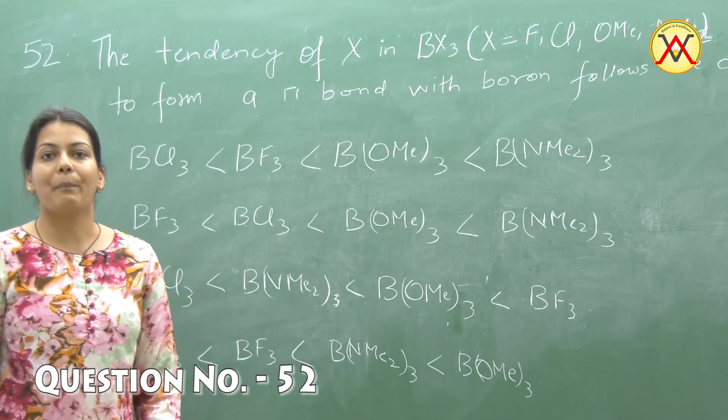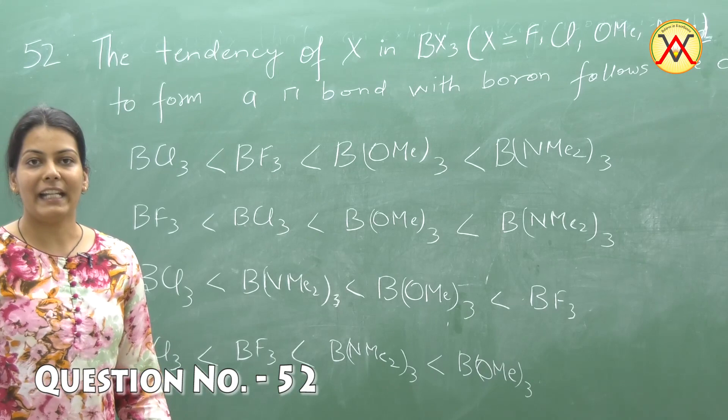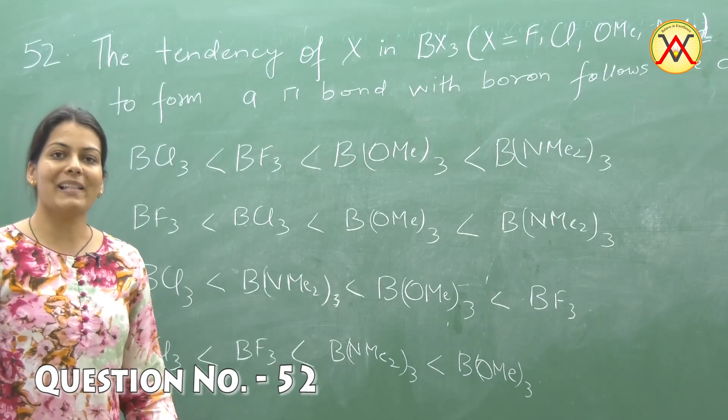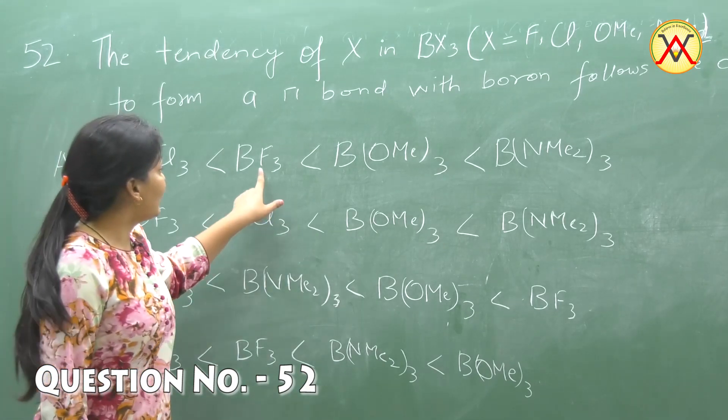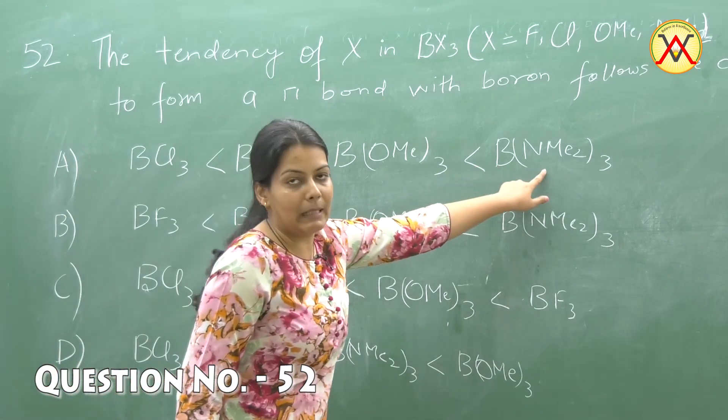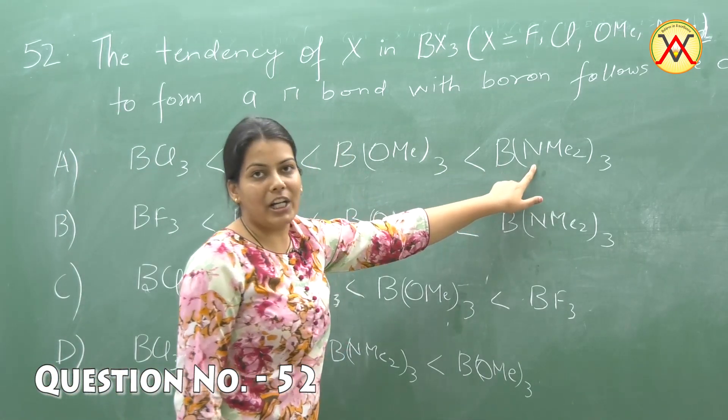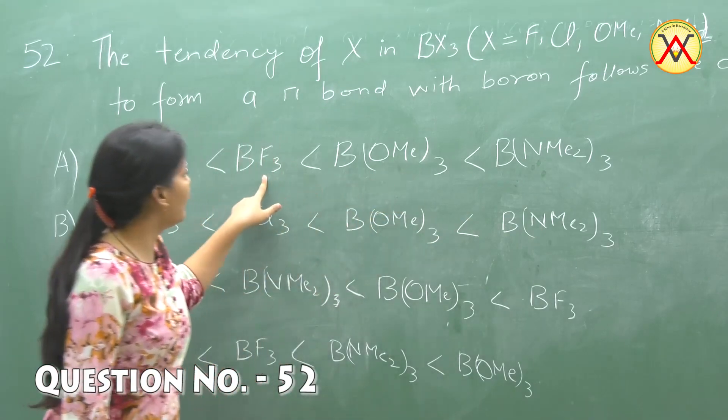As we know, nitrogen is a better donor, has better donating ability than oxygen, which in turn is a better donor than fluorine. If we talk about the second period, nitrogen is the best donor, then oxygen, and then fluorine.